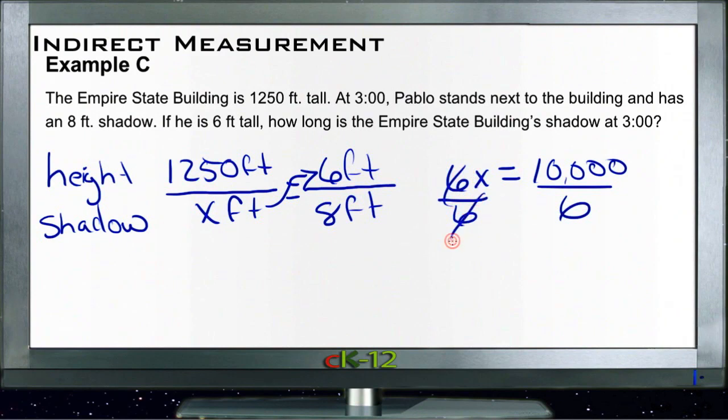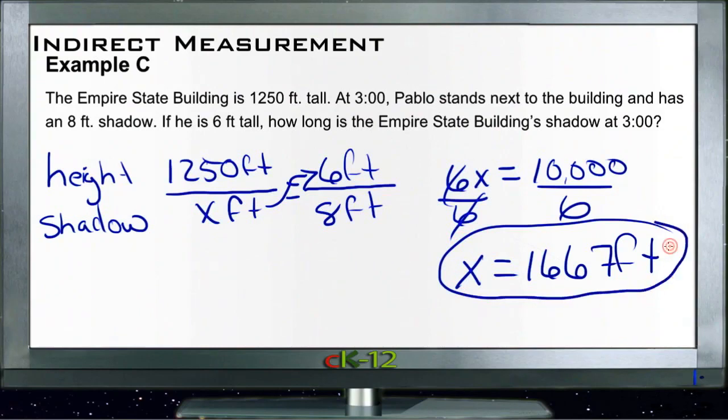10,000 divided by 6 is 1,666, 1,667. So x is 1,667. If he's 6 feet tall and casts an 8 foot shadow, and the Empire State Building is 1,250 feet tall, it would cast a 1,667 foot shadow. And there we go.